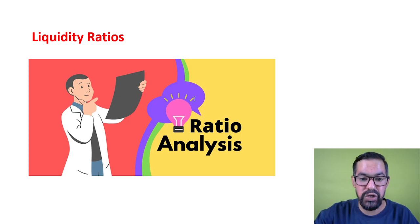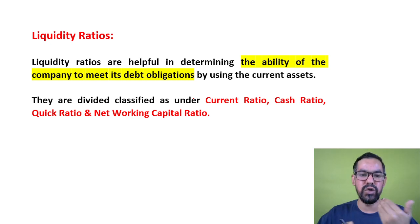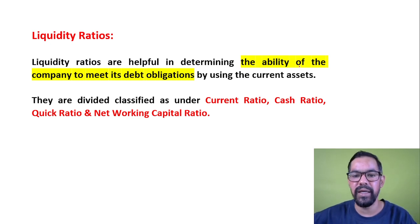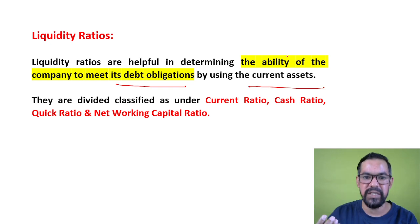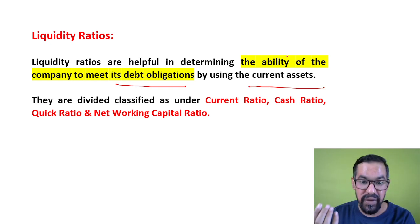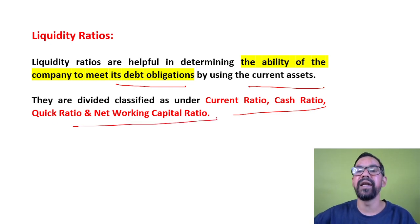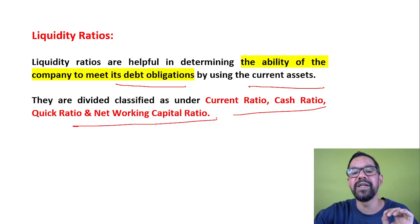The major ratios under liquidity ratio are: current ratio, acid test ratio, quick ratio, and net working capital ratio. We will go through each one with defined cases and solve some problems to give you a better understanding. Liquidity ratios are helpful in determining a company's ability to meet its short-term debt obligations using current assets, which include cash, payment receivables, cash equivalents, and marketable securities.